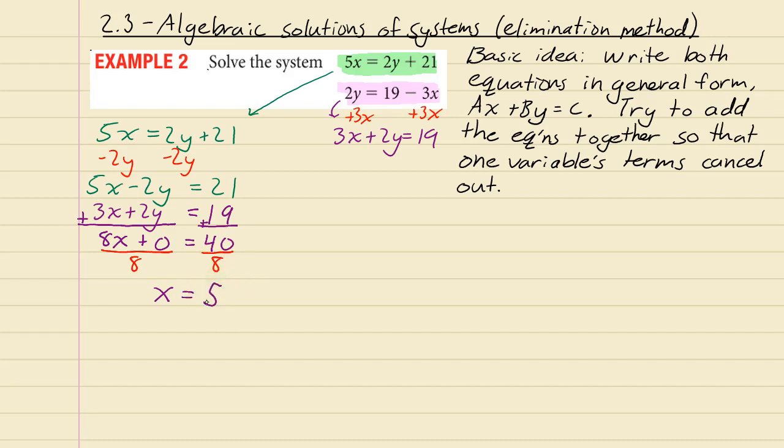Once you have that, you can plug that into whichever one of the equations you like. I'll just use the original green equation to find out what y is. I'm going to replace the x in this equation with the value of x that makes it work, which should be 5. So we're going to do 5 times 5 and that's going to be 25. Subtract the 21 from both sides and divide by 2.